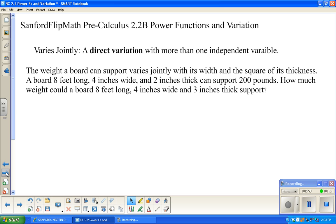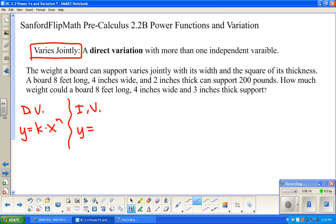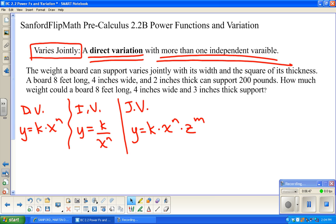One more idea in the variation plan. We already have direct variation, y equals k times x to the n. We have inverse variation, which is y equals k divided by x to the n. We're just going to add one more: joint variation. Varies jointly means it's a direct variation with more than one independent variable. So, we have multiplication with both variables.